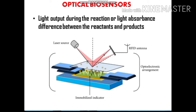Optical biosensors work on the principle of light output during a reaction or light absorbance differences between reactant and product. An example is a biosensor used in the food industry to detect contamination: a biosensor strip is placed inside a food packet. If contaminated with bacteria, it illuminates. This is achieved by immobilizing luciferase enzyme obtained from fireflies. When bacterial cells interact with luciferase they are lysed, releasing ATP. When ATP reacts with D-luciferin in the biosensor, luminescence is produced, indicating contamination.